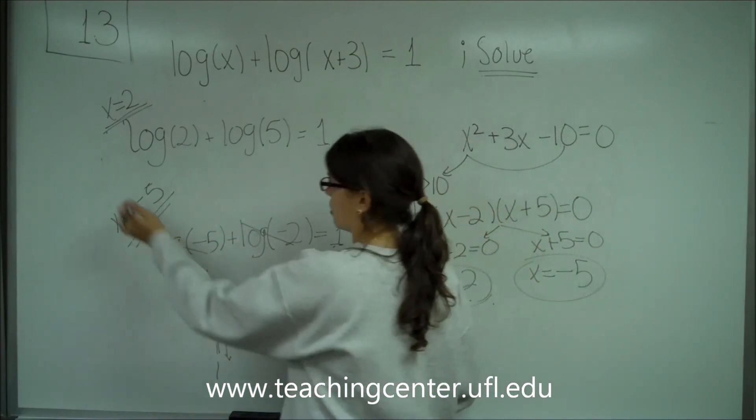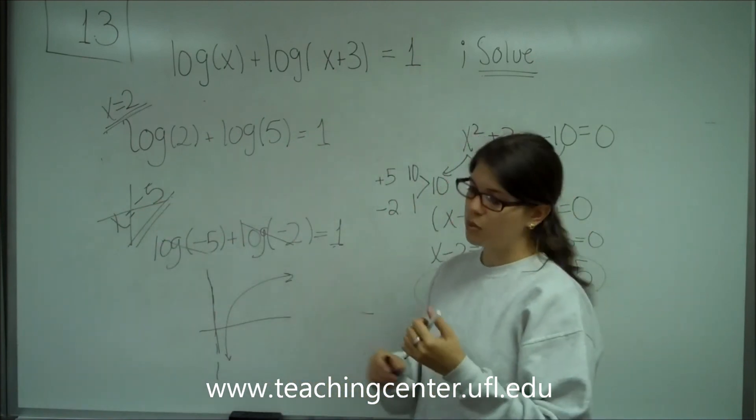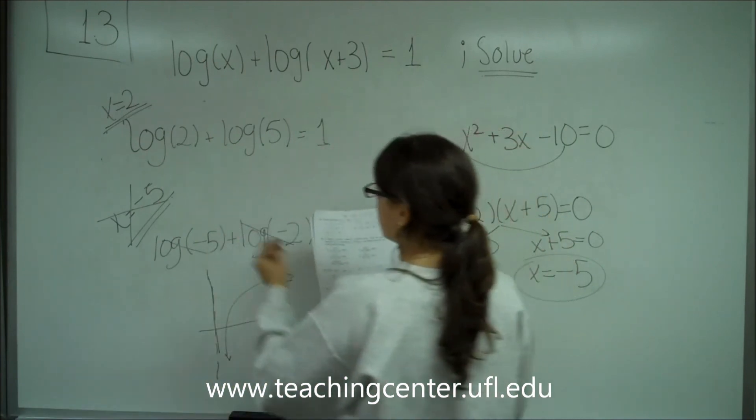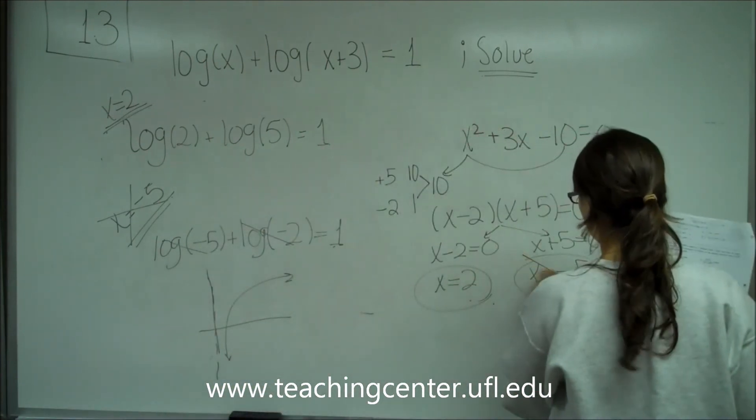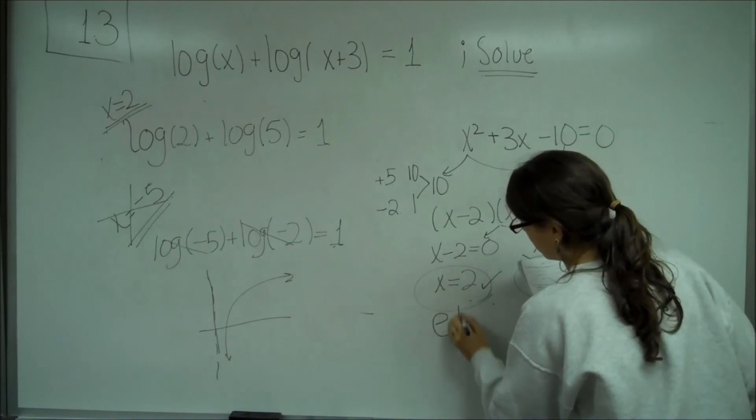And so this cannot be right. So the only possible answer is x = 2, which is choice e. So this is not right and this one is. And that's choice e.